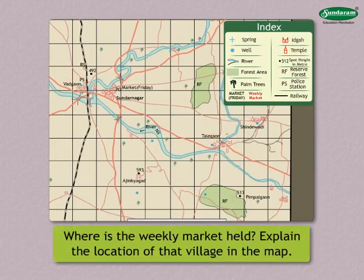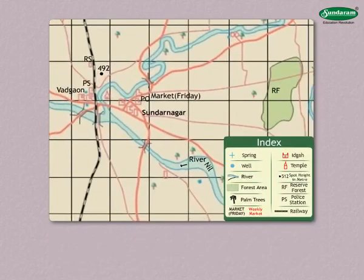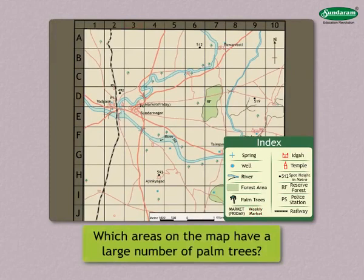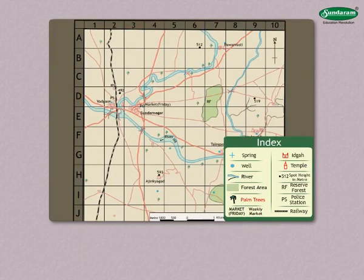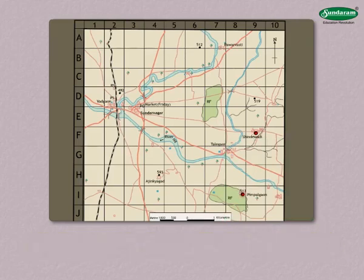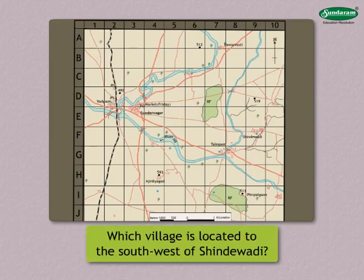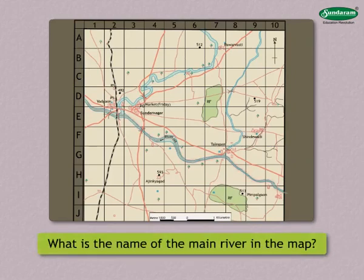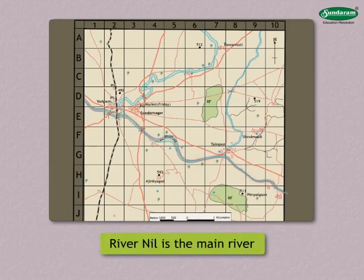Where is the weekly market held? Explain the location of that village in the map. Answer: The weekly market is held in Sundar Nagar. It is located in D3. Which areas on the map have a large number of palm trees? Answer: The areas along the banks have a large number of palm trees. In which direction from Shindeewadi is Pimpalgaon? Answer: Pimpalgaon is in the south direction from Shindeewadi. Which village is located to the south west of Shindeewadi? Answer: Talegaon is located to the south west of Shindeewadi. What is the name of the main river in the map? Answer: River Neel is the main river in the map.